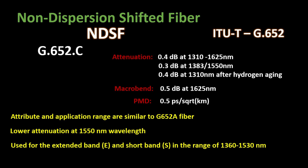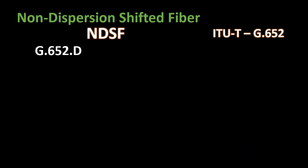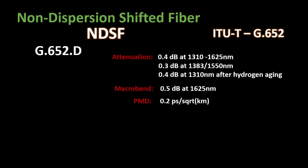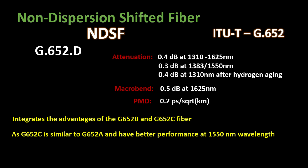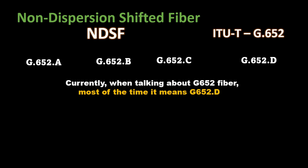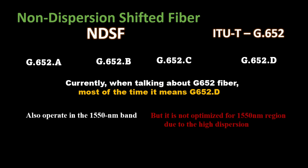G.652D fiber has more improvement with PMD at 0.2 picoseconds, including water peak elimination. It integrates the advantages of B and C fiber. Since C fiber is similar to A, D category almost covers all categories: A, B, and C. Nowadays, when talking about G.652 fiber, most of the time it refers to D category. This fiber also operates in the 1550 nanometer band, but has high dispersion of around 17 picoseconds. By incorporating dispersion compensation, it can also operate at 1550 nanometers.